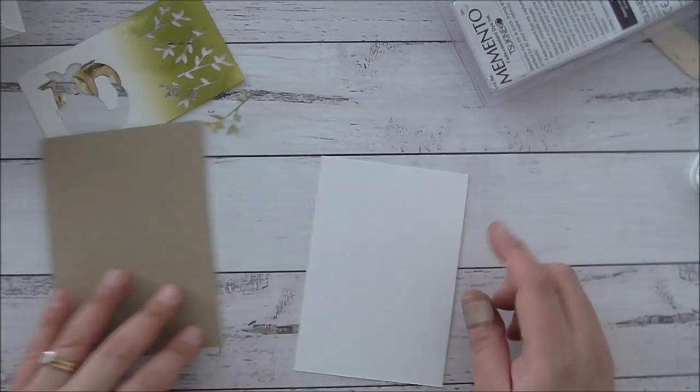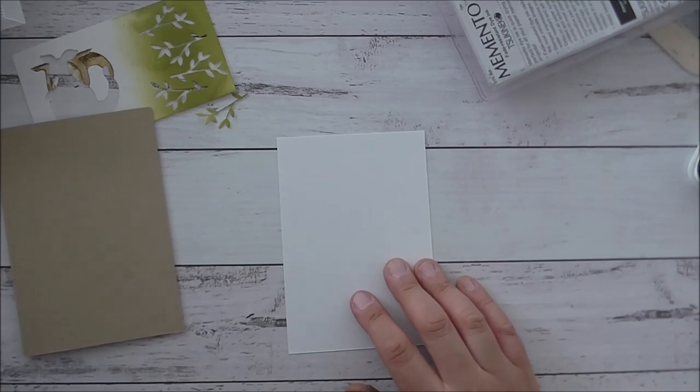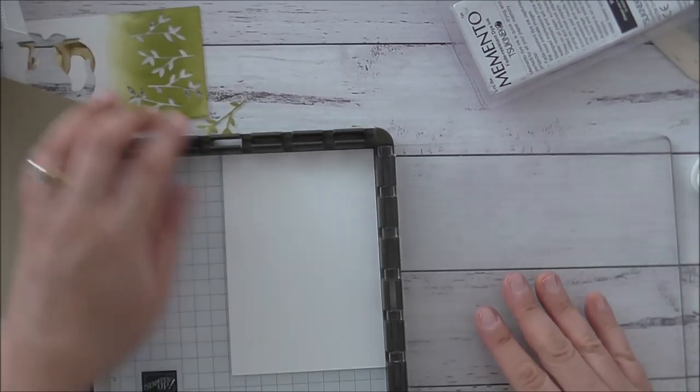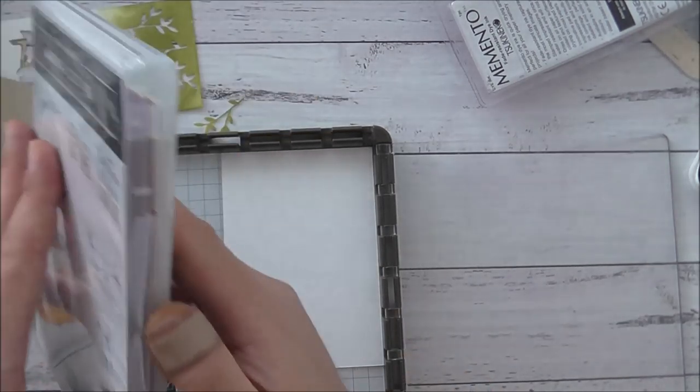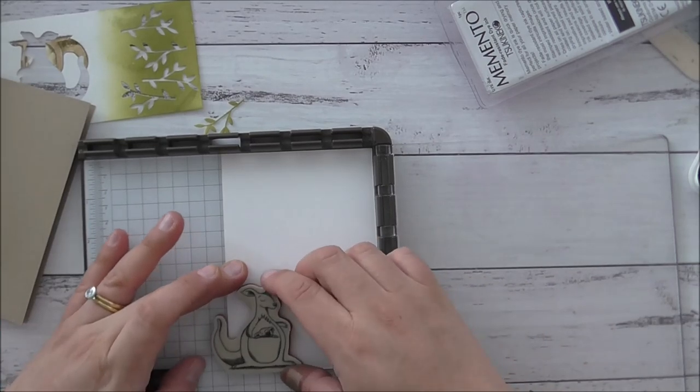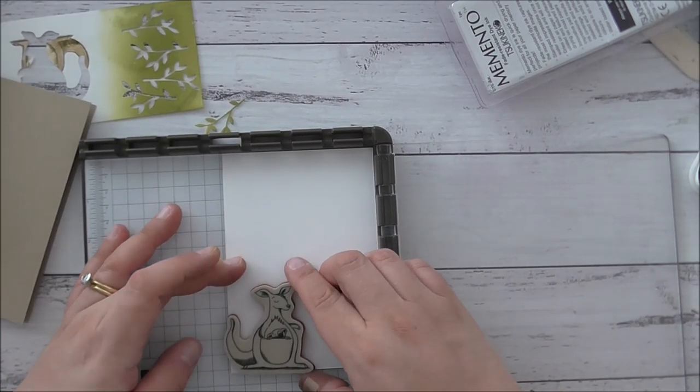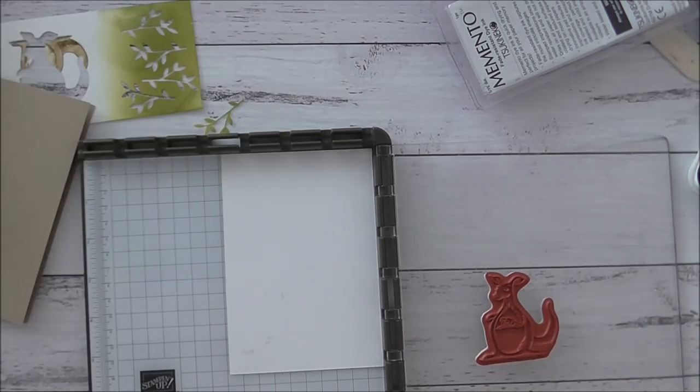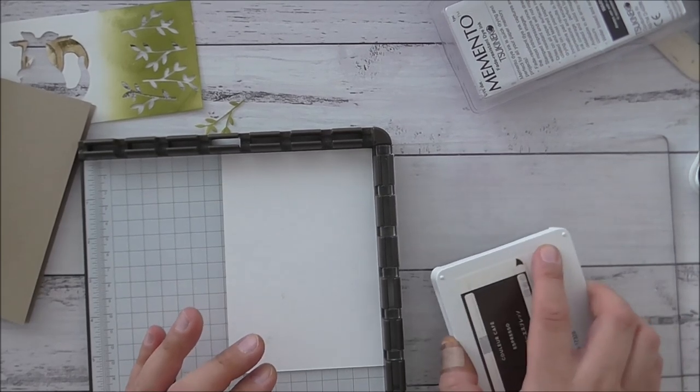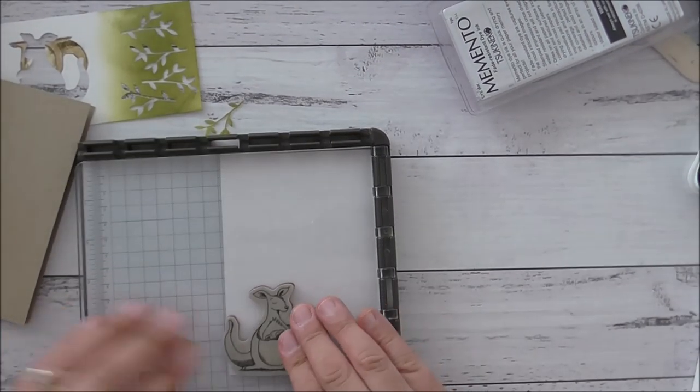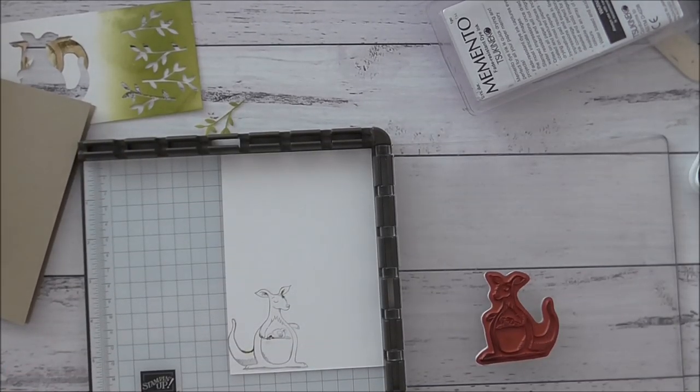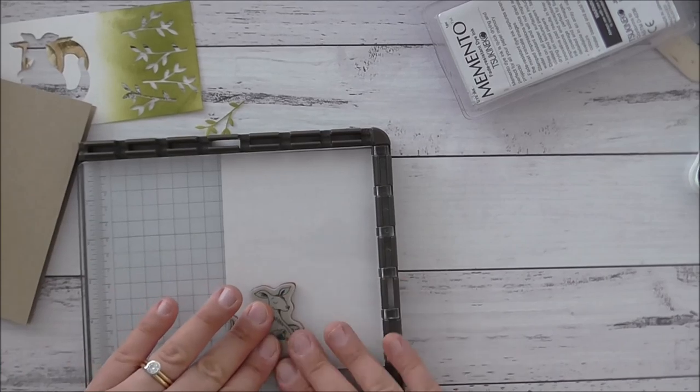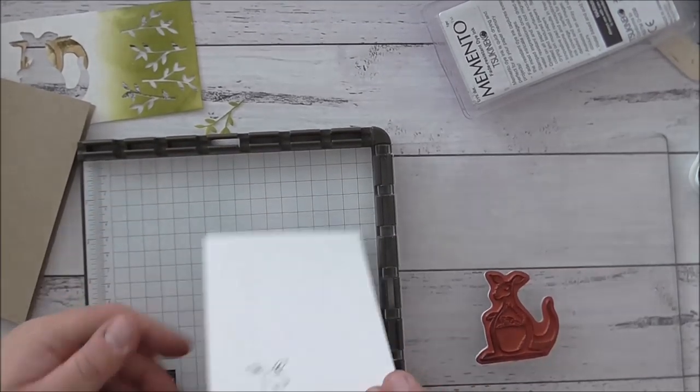One thing I forgot to do was stamp the kangaroo on the inside. So I'll stamp that kangaroo just on the bottom down here. I think that will be cute. So I'll bring that back out again. Forgot to do that. I'll put the kangaroo down here and I'm going to use Early Espresso now. See I made a mark there because it wasn't 100% dry, but I'll use my Early Espresso now. Doesn't have to be perfect. And I'll just let that dry, all done.